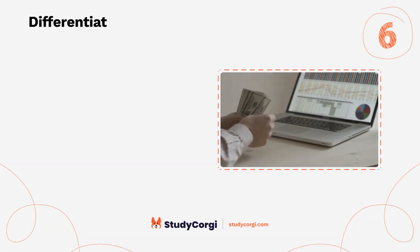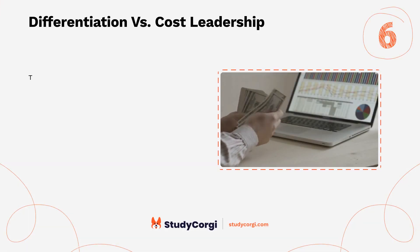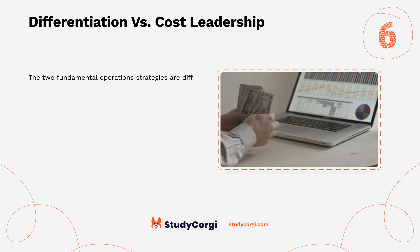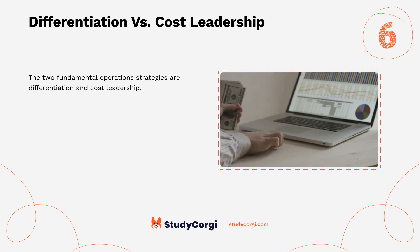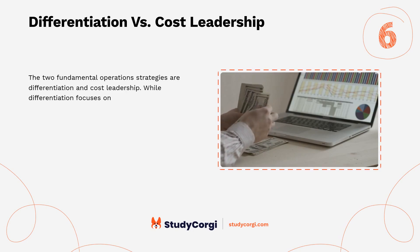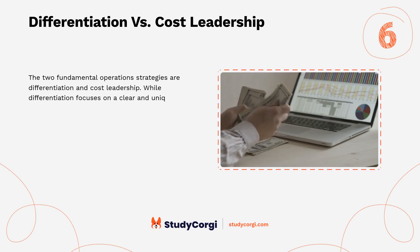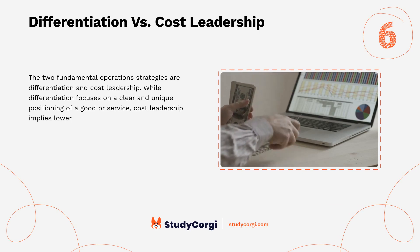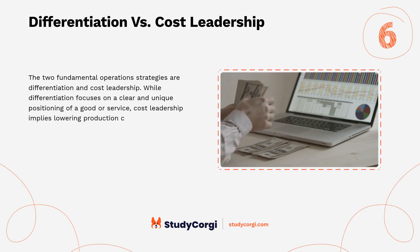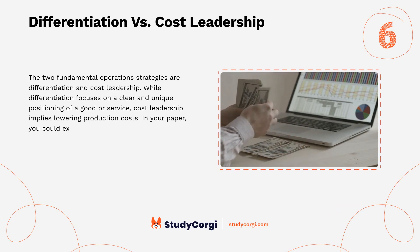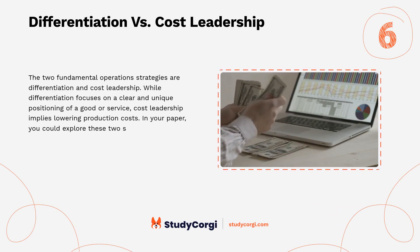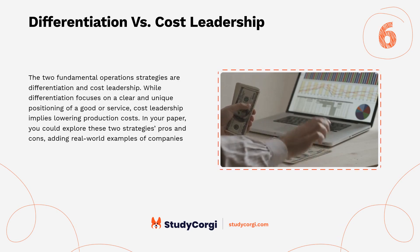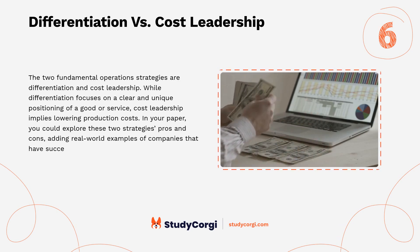Differentiation vs. Cost Leadership. The two fundamental operation strategies are differentiation and cost leadership. While differentiation focuses on a clear and unique positioning of a good or service, cost leadership implies lowering production costs. In your paper, you could explore these two strategies' pros and cons, adding real-world examples of companies that have successfully implemented them.